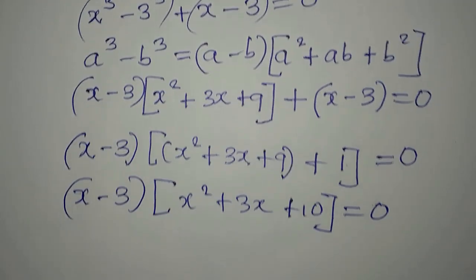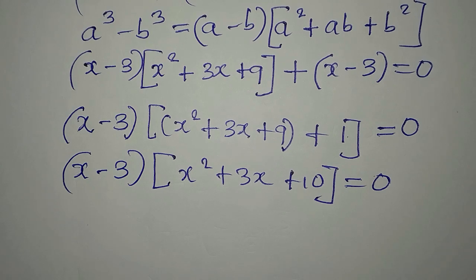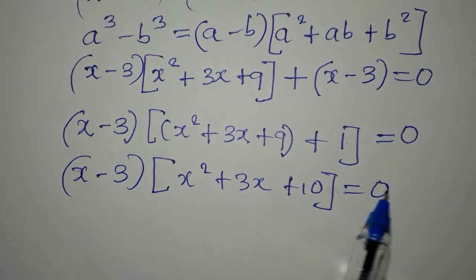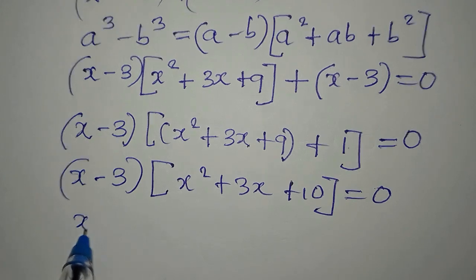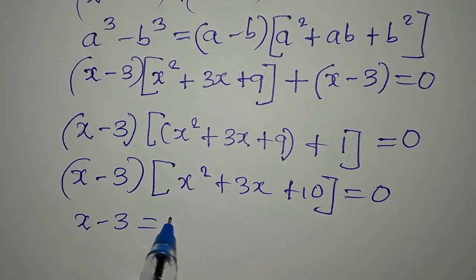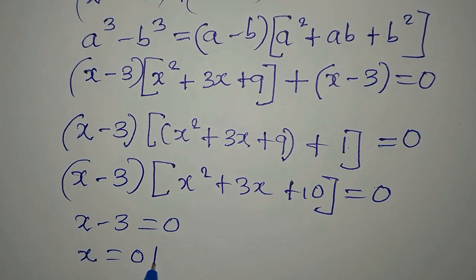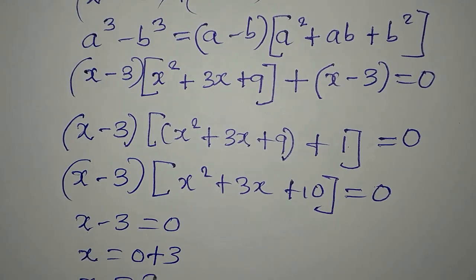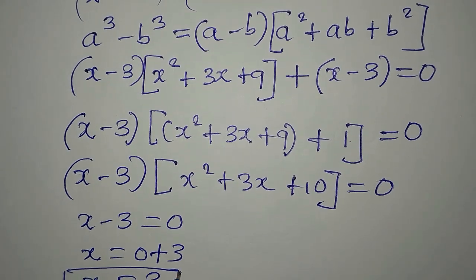Now we apply the zero product rule — either x minus 3 equals zero, or x squared plus 3x plus 10 equals zero. If x minus 3 equals zero, then x equals 3. This is the real solution to this problem.